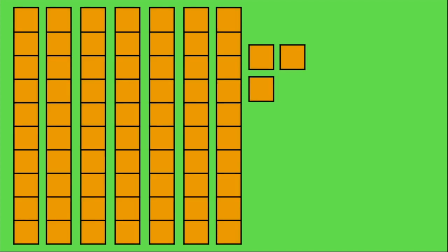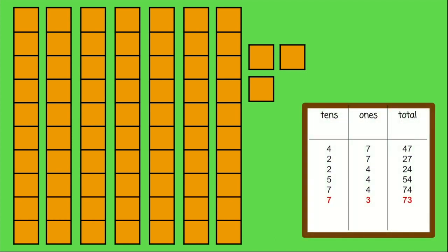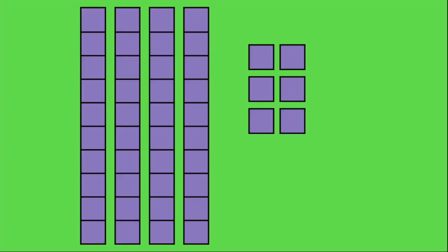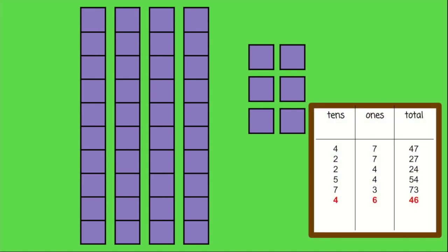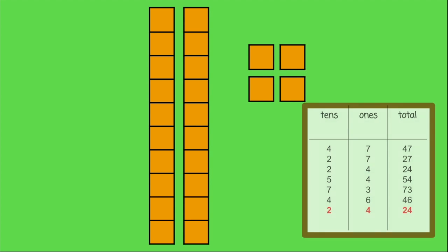Try this one. Ten, twenty, thirty, forty, fifty, sixty, seventy, and three — seventy-three. Great job. Try this one. Did you get 46? You're a rock star. What about this one? I heard some people just shouting that one out. Twenty-four — easy. Great job.